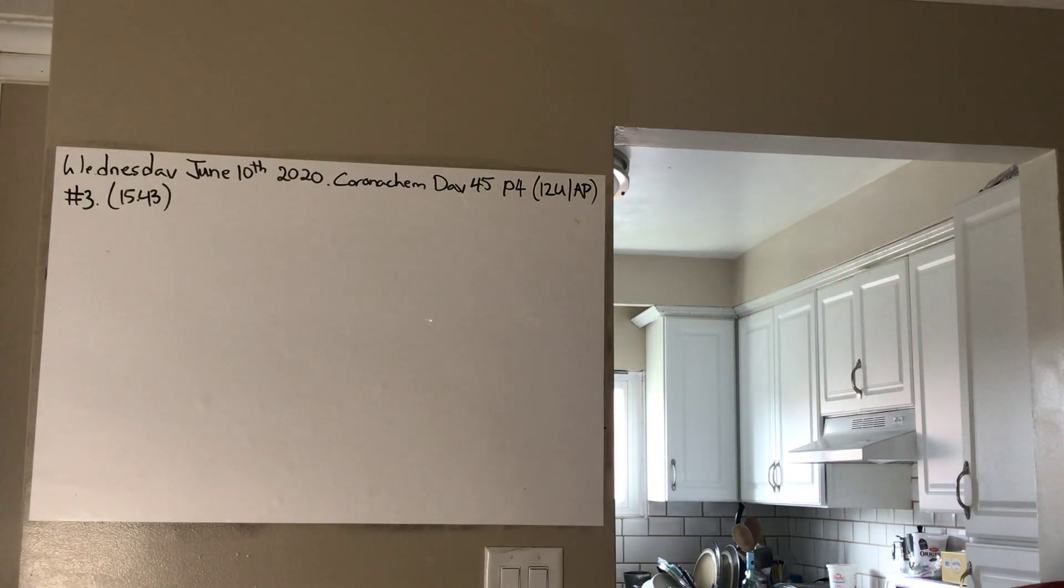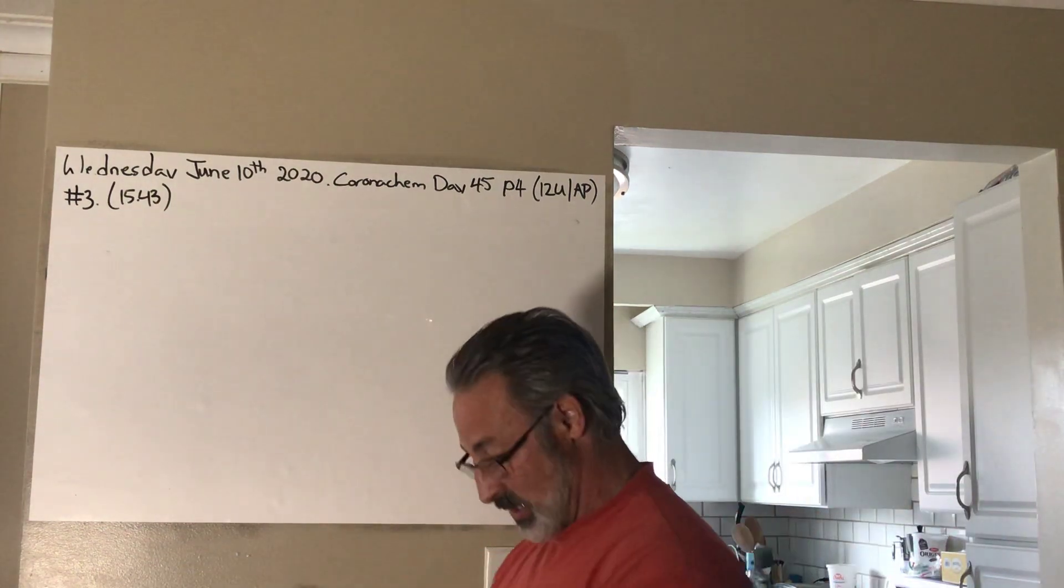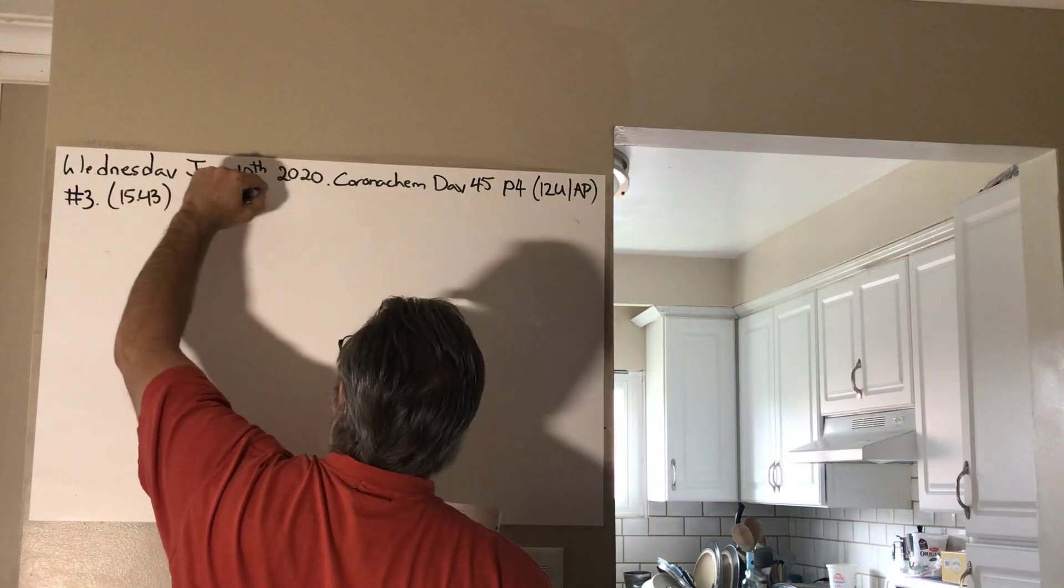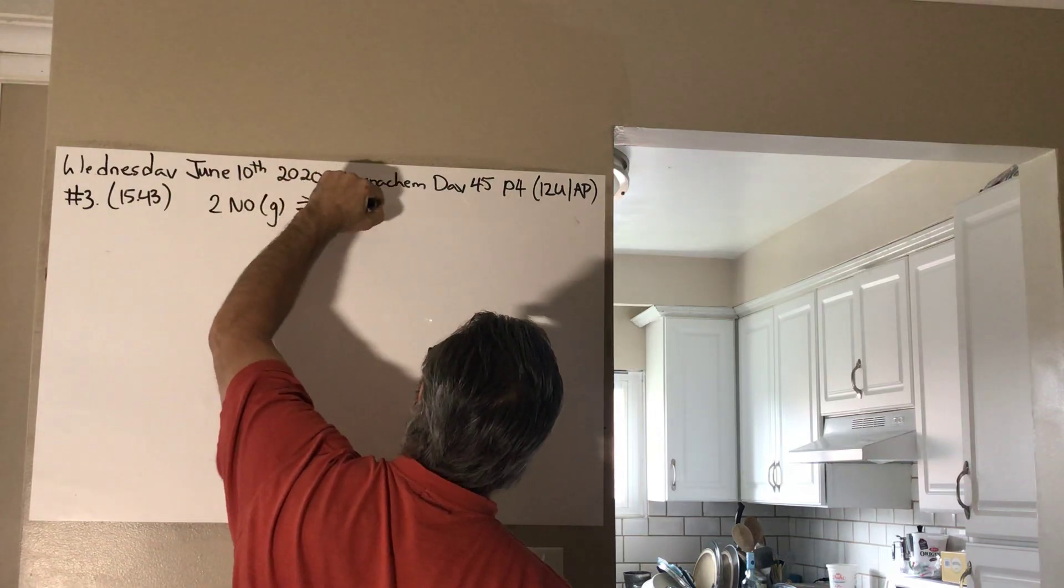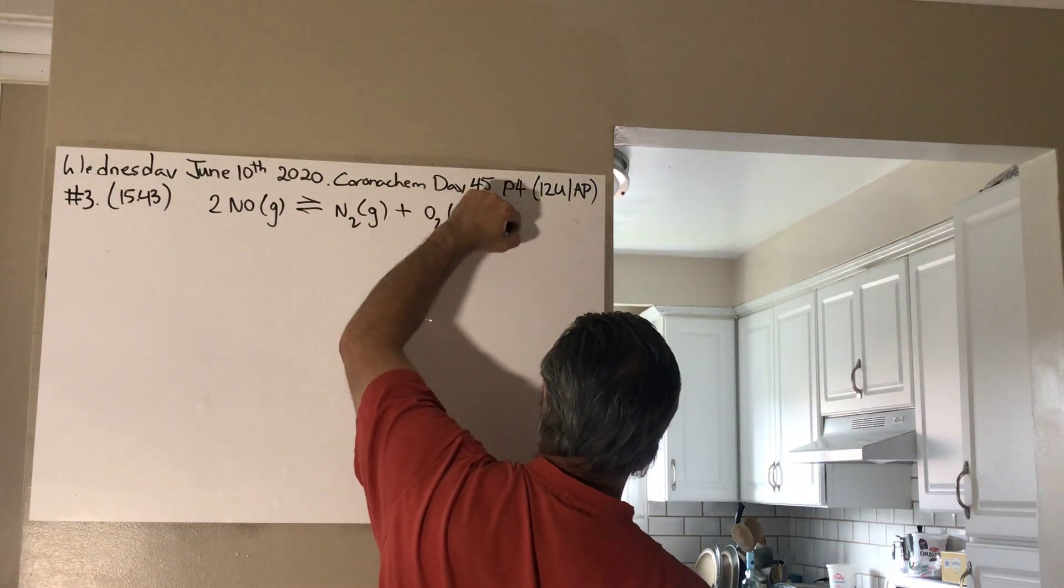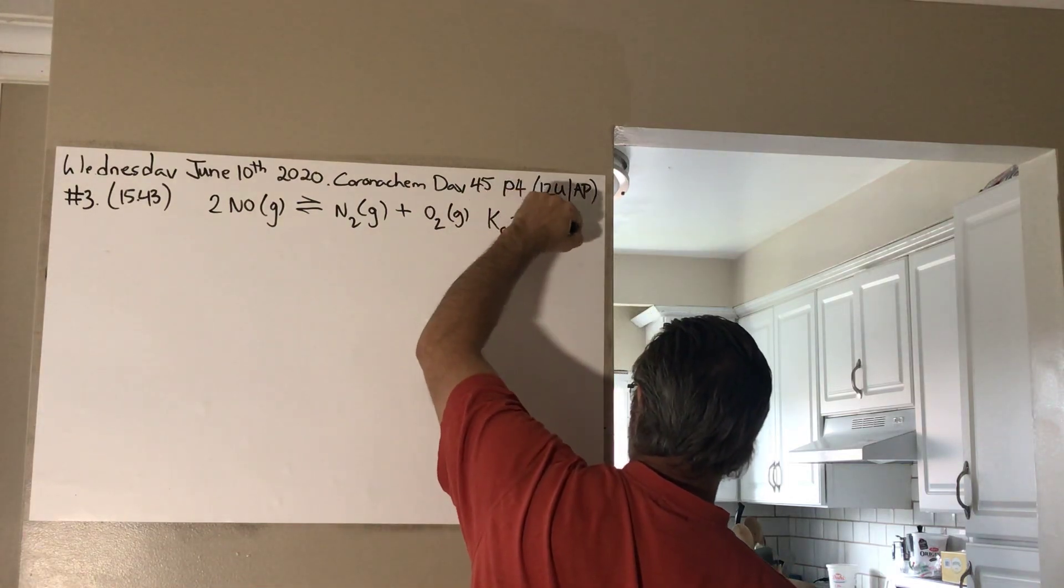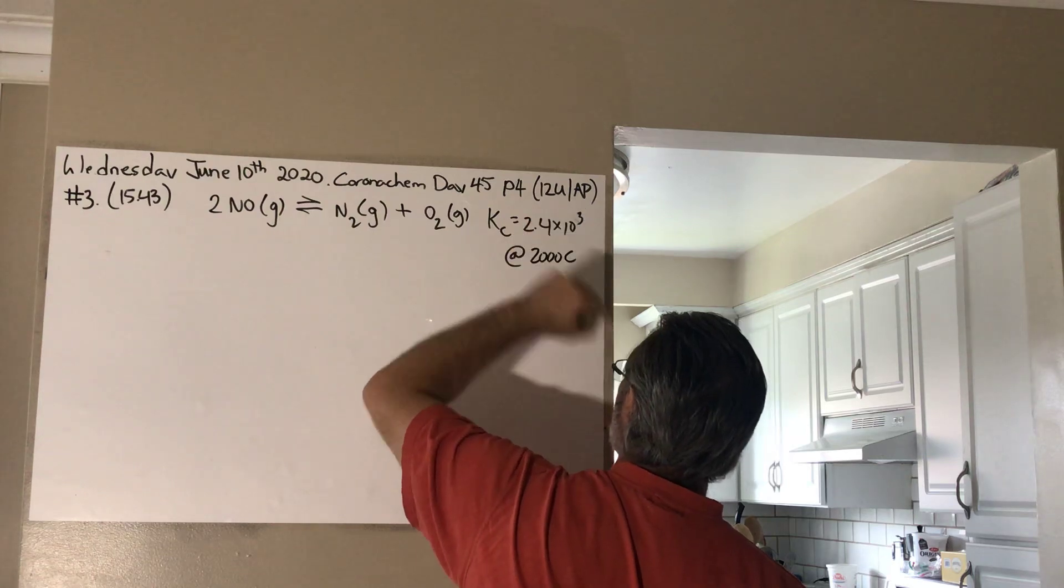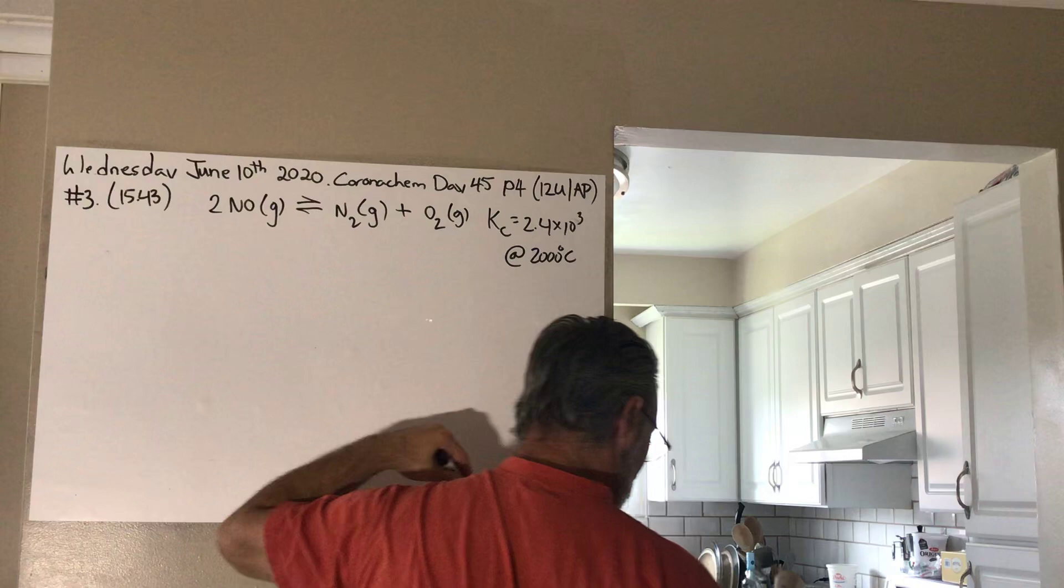43. At 2,000 degrees Celsius, the equilibrium constant for the reaction, 2 nitrogen monoxide gas turning into nitrogen gas, plus O2 gas, it's a homogeneous equilibrium, everything is included, is Kc equals 2.4 times 10 to the 3. If the initial concentration of NO is 0.2 molar, what are the equilibrium concentrations of nitrogen monoxide, nitrogen and oxygen? So, this is also an ice table problem. It's going to be helped by laying everything out. I recommend very strongly that even if you don't know how to solve it, set it up an ice table, because I give marks just for that part.